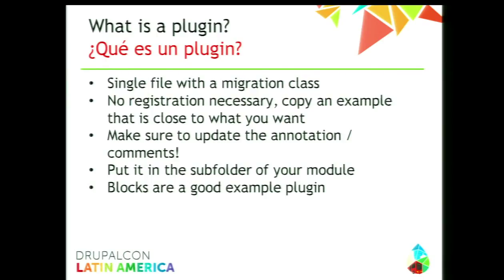One important point when you make plugins: you don't need to register them anywhere — not in your info file, nothing. You just need to put it in the folder where it wants to go. So if you went into core modules, migrate_drupal, plugin, migrate, source, D6, you would put it in a like place in your own module — same naming convention, same folder structure. If you've never used plugins, a really awesome way to try is to make a custom block. Blocks are plugins in D8, so under your source folder under your plugin folder you can have a block folder. Go copy an existing block, put it there, and change the name in the comments — because comments are now code.